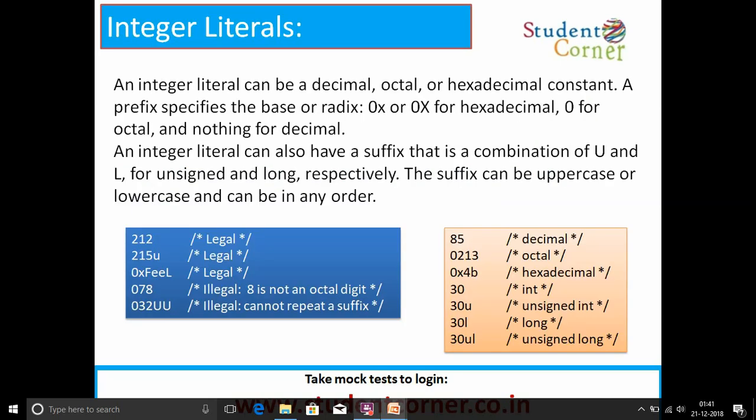Integer literals, also called integer constants. An integer literal can be a decimal, octal, or hexadecimal constant. A prefix specifies the base or radix: 0x or 0X for hexadecimal, 0 for octal, and nothing for decimal. An integer literal can also have a suffix that is a combination of U and L, for unsigned and long respectively.